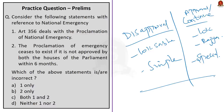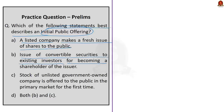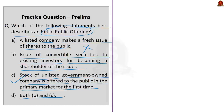Now let's move on to the preliminary practice question discussion. Question 1: Which of the following statements best describes an initial public offering? Option A: a listed company makes a fresh issue of shares to the public. Option B: issue of convertible securities to existing investors. Option C: stocks of an unlisted government-owned company is offered to the public in the primary market for the first time. Option D: both B and C. The correct answer is option C. Option A is incorrect because it mentions a listed company — it should be unlisted. Option B is incorrect because it should be new investors, not existing investors.